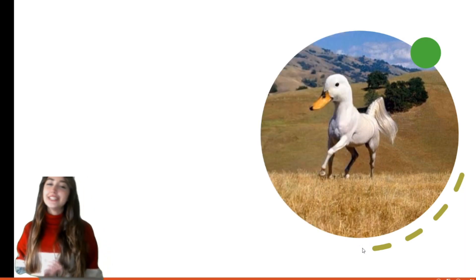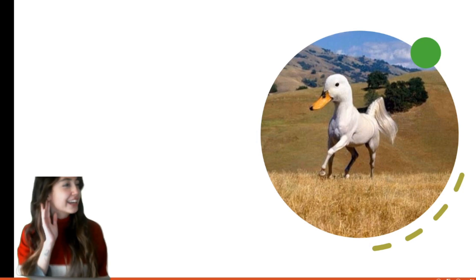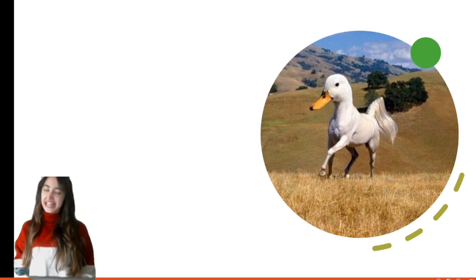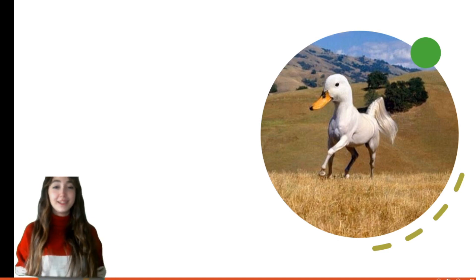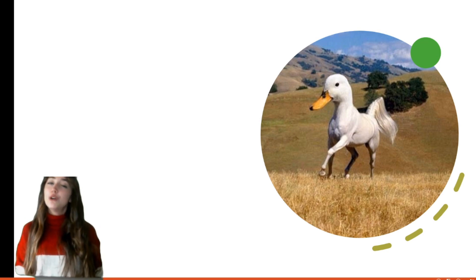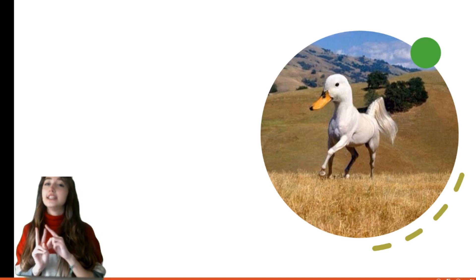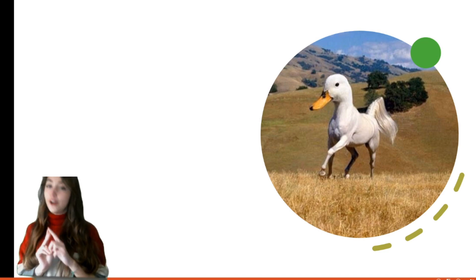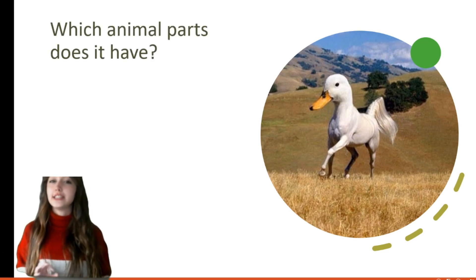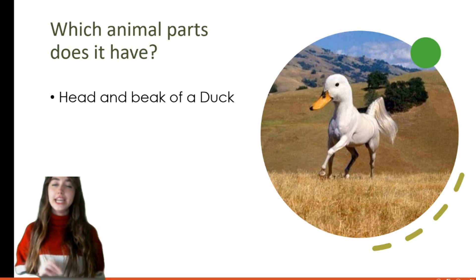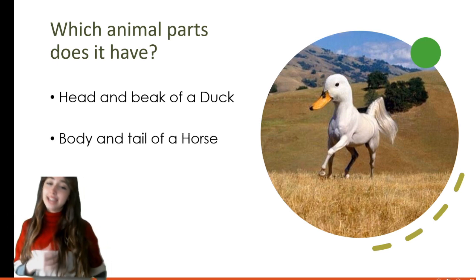Can you tell me the name of this animal? You cannot hear any voice because this animal is not real. I wish we had an animal like that, but unfortunately we don't. Which two animals are mixed up in this picture? Yes — a duck and a horse! Which animal parts does it have? It has the head and beak of a duck, and the body and tail of a horse.